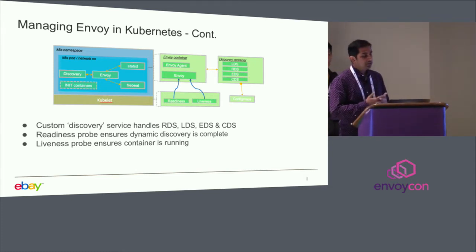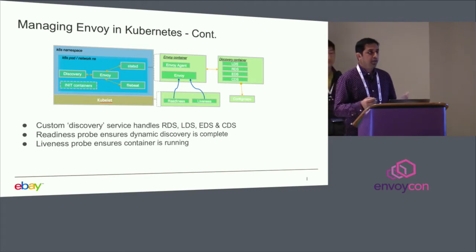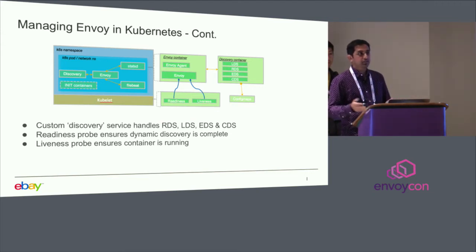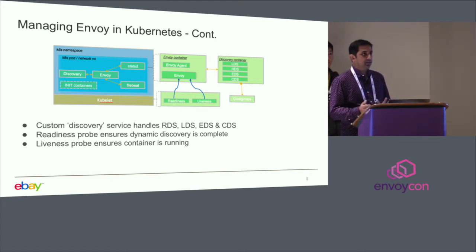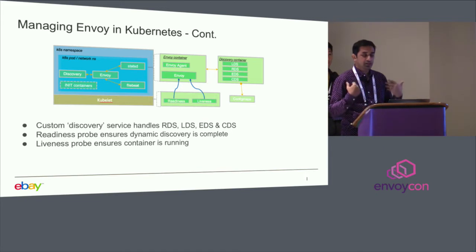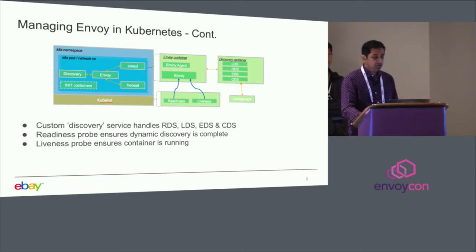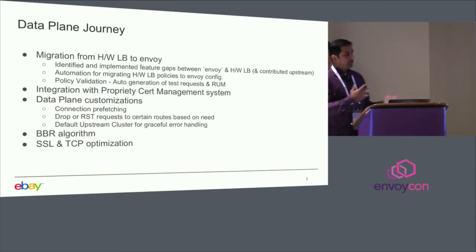We also use readiness and liveness probes. The readiness probe ensures the container is up but not receiving traffic until dynamic discoveries and applications are ready — you expose your own health endpoint in Envoy and only mark the container as ready once the listener stack is open. Until then, the L4 load balancer does not send traffic to the L7. The liveness probe continuously monitors Envoy; if the container crashes, it is immediately removed from the consistent hashing table so no more new connections are sent to it.